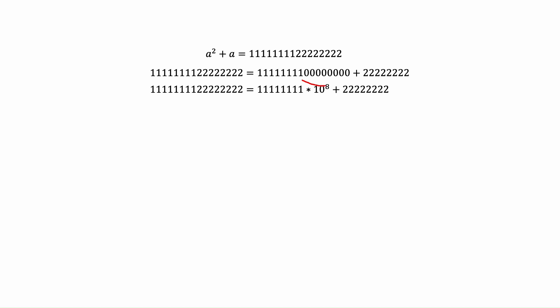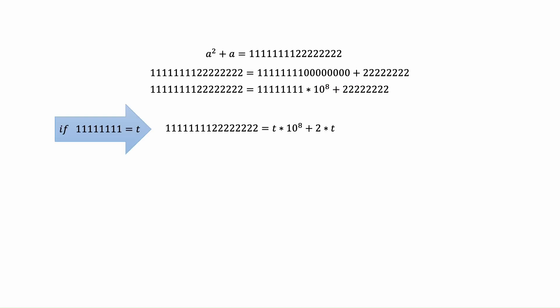Now instead of those eight zeros we can write ten to the power of eight, making the expression much simpler. So this is a huge number, and we want to make the equation simpler. Let's define a new variable: we will define eight ones as t. So we will use t instead of eight ones. This becomes t times ten to the power eight, plus two t — because the eight twos is exactly two times the number we defined as t.